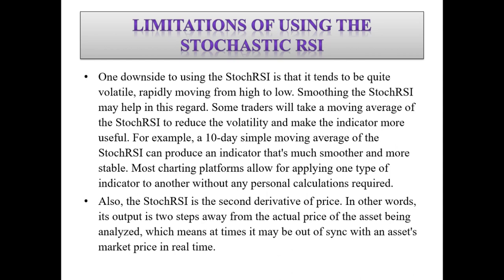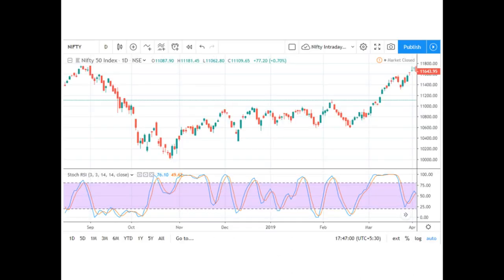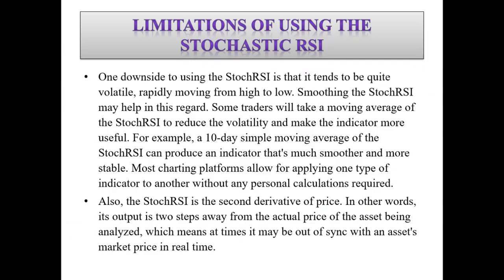When you apply a moving average, you end up with two lines on the chart. Another important limitation is that the Stochastic RSI is effectively the second derivative of price — its output is two steps away from the actual price of the asset being analyzed. This means it can sometimes be out of sync with the asset's market price in real time, which is something to keep in mind.